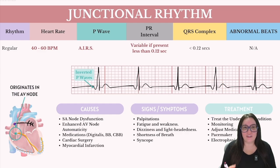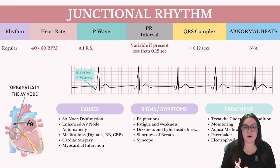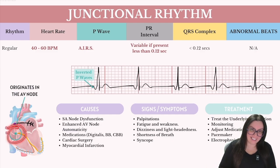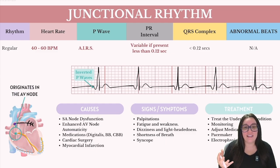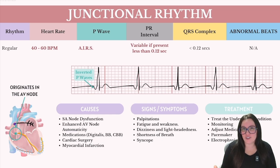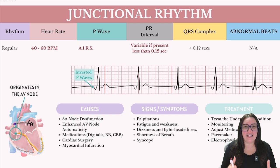To review, the junctional rhythm is a type of cardiac arrhythmia where the heart's primary pacing responsibility shifts from the sinoatrial node to the atrioventricular node or the surrounding tissue. This ultimately occurs when the sinoatrial node fails to initiate the heartbeat or the impulses are blocked somewhere along the pathway, prompting the AV node to take over. This backup system helps maintain a heartbeat, but at a different rate and rhythm than our normal sinus rhythms.